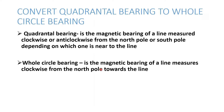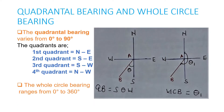Whole Circle Bearing is the magnetic bearing of a line measured clockwise from the north pole towards the line. We are going to look at how to illustrate the Quadrantal Bearing and the Whole Circle Bearing, and try to give the differences between them.